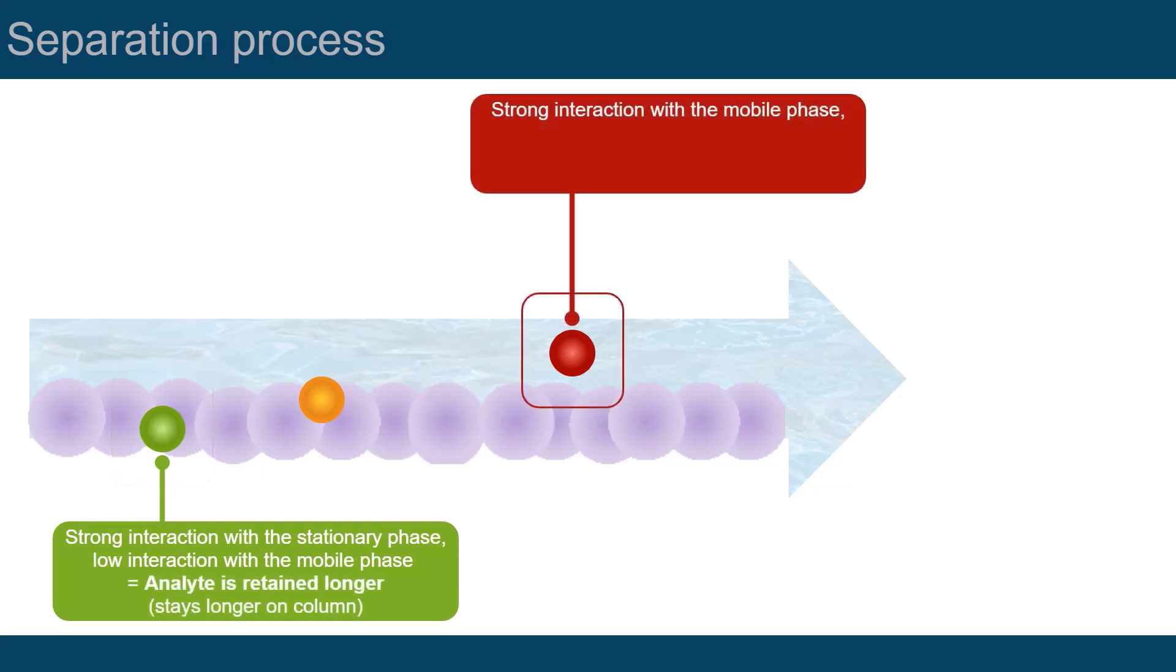The red analyte rather interacts with the mobile phase, but is not attracted by the stationary phase. This analyte is transported faster through the LC system, that is, it is eluted more quickly.